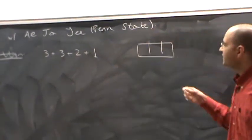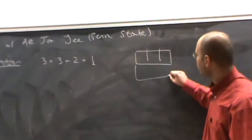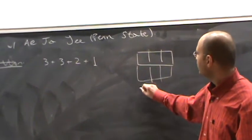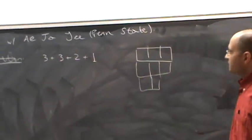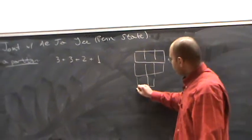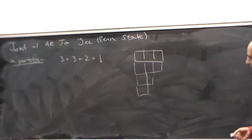A row of 3 boxes for the first part. Another row of 3 boxes for the second part. Another row of 2 boxes for the third part. And finally, a single box for the last part.